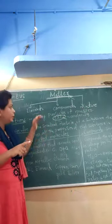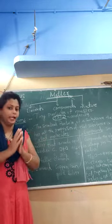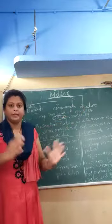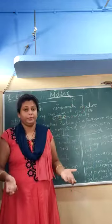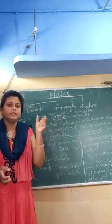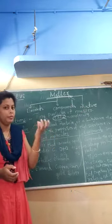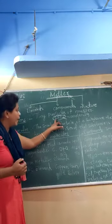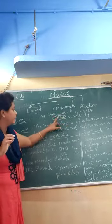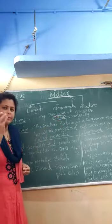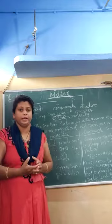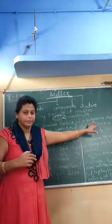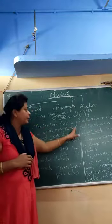First of all, to learn these, we must start from atoms. Atoms are the smallest or tiniest particles of matter — matter may be of any kind. When one or more than two atoms combine, they form a substance that gives the same properties. That is called a molecule. Molecules are the smallest particle of a substance that has all the properties of that substance.